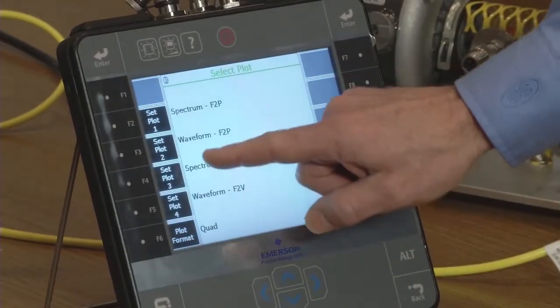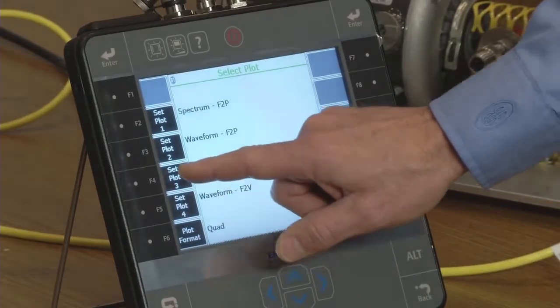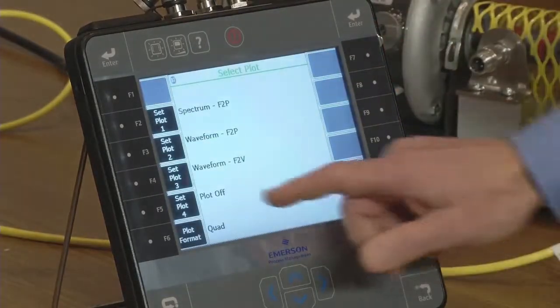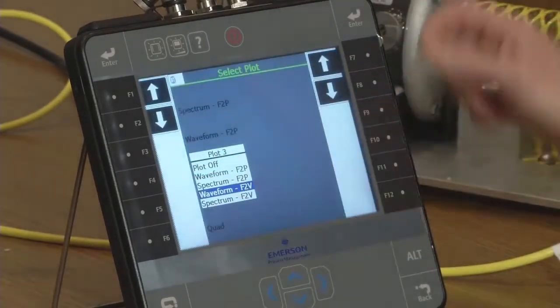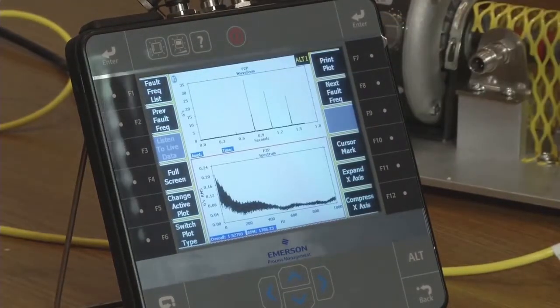I want to focus on my peak view waveform so I'm going to turn off a couple extra plots so that my remaining plot is my spectral data plus my waveform plot from the peak view.